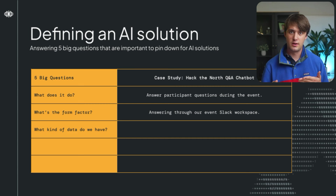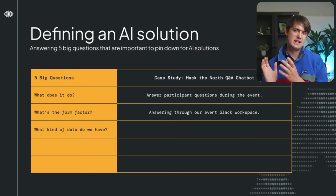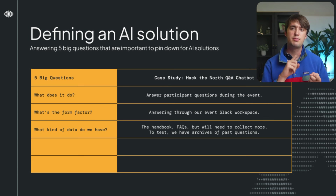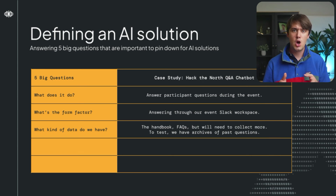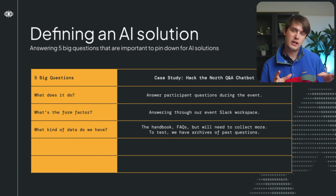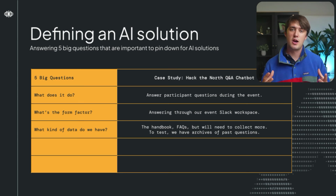The next question is what kind of data are we working with? We need to think about both the data we'll use to generate answers and the data to evaluate and test. To generate answers, we can use all our written content — the pre-existing handbook and FAQ sheets. We also identified we'd need maps, menus, schedules, and announcements fed in dynamically, as well as hooking our agent into a real-time scheduling API. For testing, we have archives of questions answered in previous years.